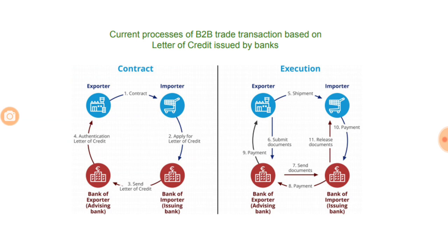This is the current process of B2B trade. First is establishing a contract: the importer applies for a letter of credit with the importer's bank, which is the issuing bank. The issuing bank sends the letter of credit to the exporter's bank, the advising bank. The advising bank sends an authentication letter of credit to the exporter, meaning the importer will agree to make payment to the exporter when the exporter meets the delivery requirements. To ensure the importer honors the agreement, the issuing bank and advising bank facilitate the transfer; if the exporter does not meet requirements, the advising bank ensures payment goes back to the importer.